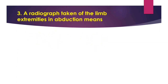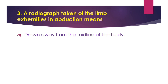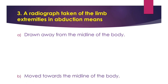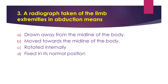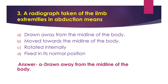Question number 3: A radiograph taken of the limb extremities in abduction means - Option A - Drawn away from the midline of the body. Option B - Moved towards the midline of the body. Option C - Rotated internally. Option D - Fixed in its normal position. The answer is Option A - Drawn away from the midline of the body.